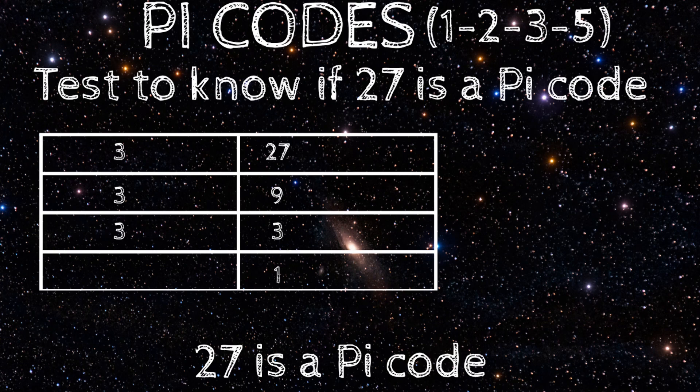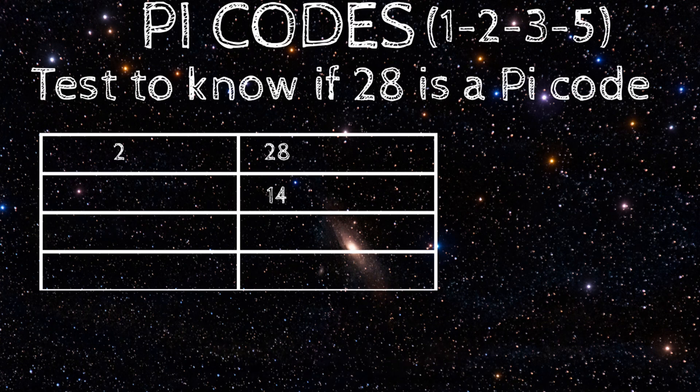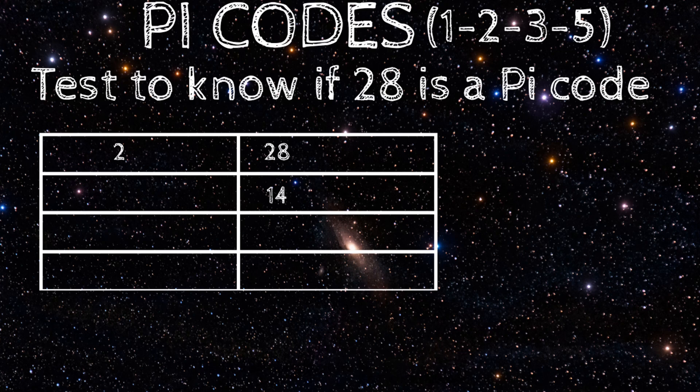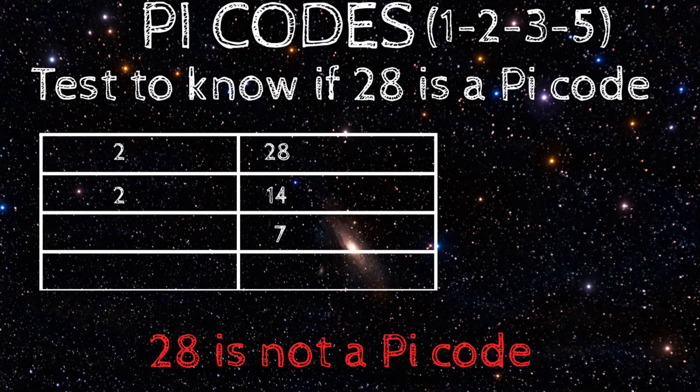Let's test the number after 27, which is 28. Starting the division with 2. 2 divide 28 to give 14. 14 divided by 2 gives 7. Now, the three zodiac numbers can't divide further. Therefore, 28 is not a pi code. Note, because 28 is not a pi code, automatically the products in this division, which are 7 and 14, are not pi codes.